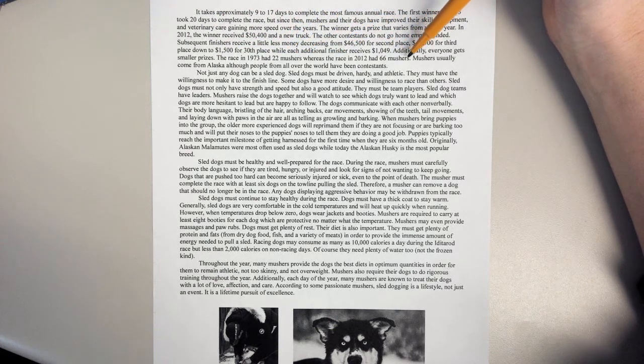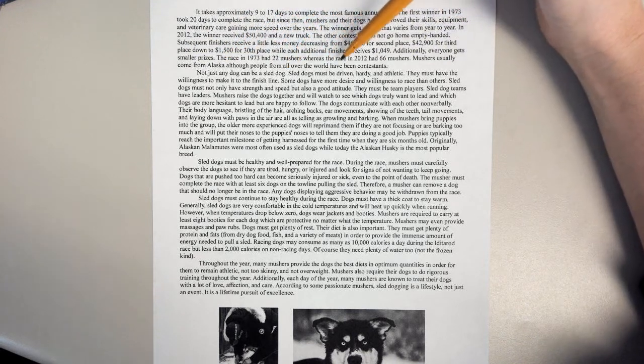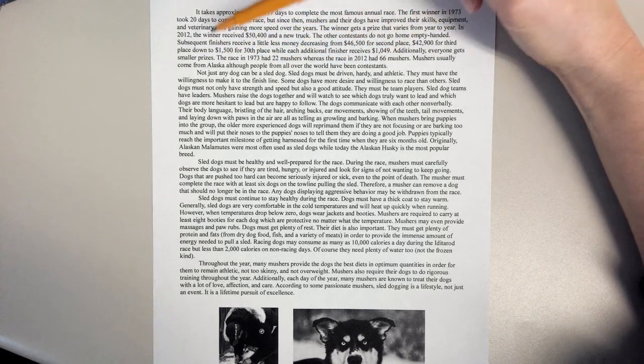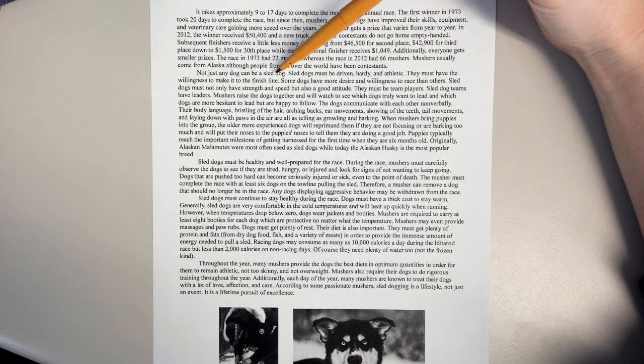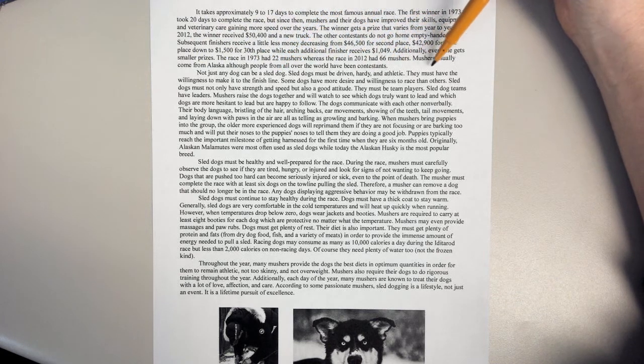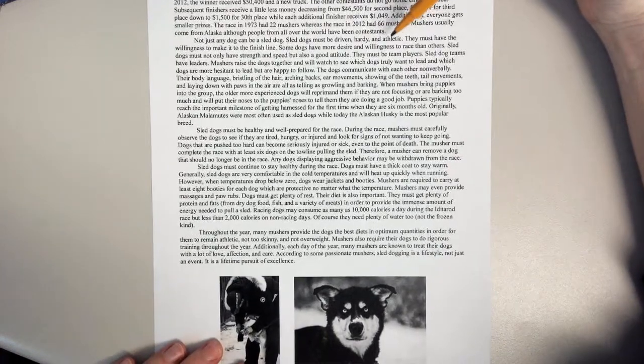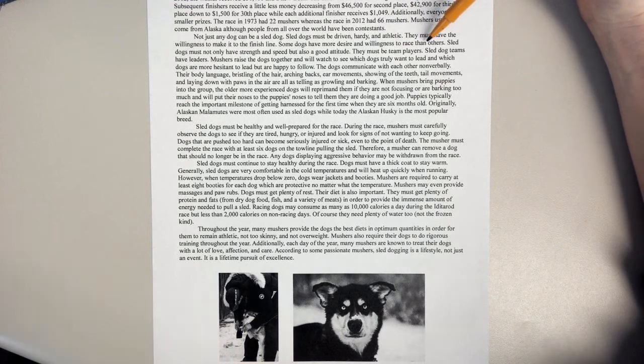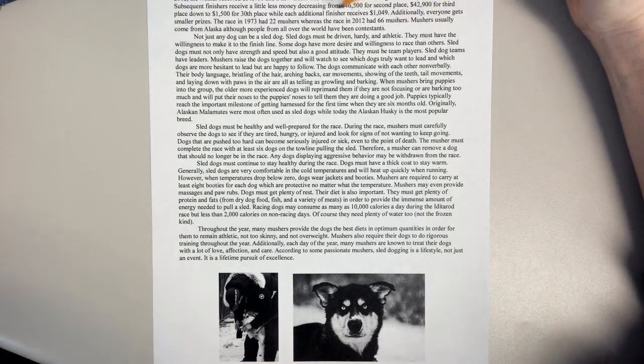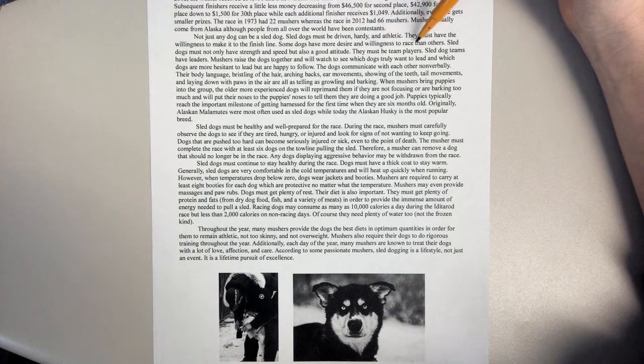The race in 1973 had 22 mushers, whereas the race in 2012 had 66 mushers. Mushers usually come from Alaska, although people from all over the world have been contestants. Not just any dog can be a sled dog. Sled dogs must be driven, hardy, and athletic. They must have the willingness to make it to the finish line. Some dogs have more desire and willingness to race than others.